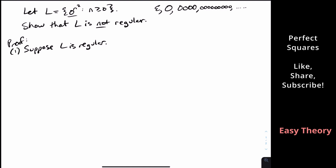Suppose L is regular. This is always the first step when proving something using the pumping lemma — you suppose that the language is regular, and then because L is regular, you appeal to the pumping lemma. That gives us a pumping constant P for this language. If you recall the proof of the pumping lemma, P refers to the number of states in the associated DFA, although we won't be thinking of a DFA directly.